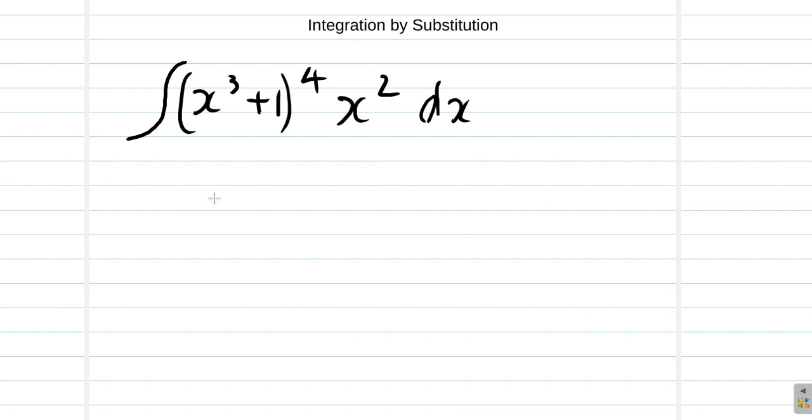Now, how would you determine which technique you're going to use? Well, you see that x cubed plus 1 is a function, and all of that to the power of 4 is another function. So it's a function of a function. That suggests that you're going to use substitution.